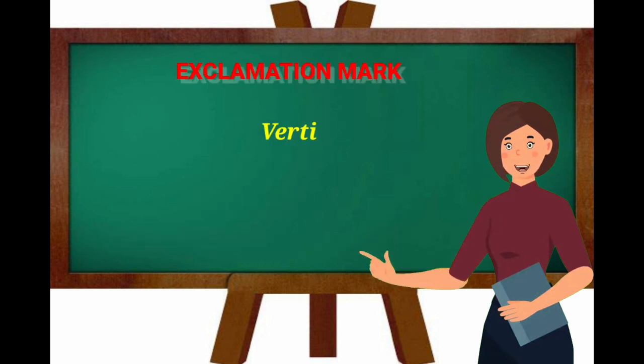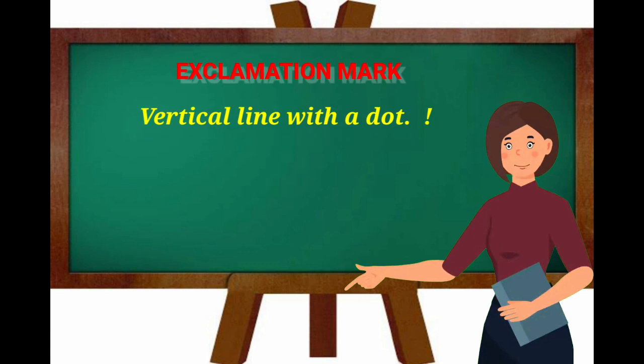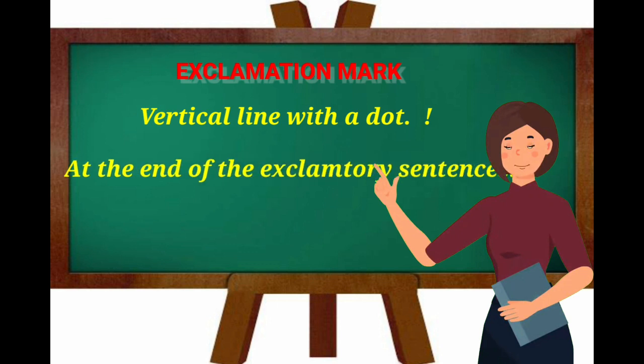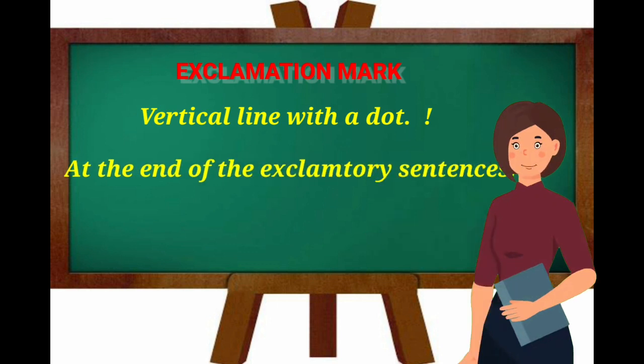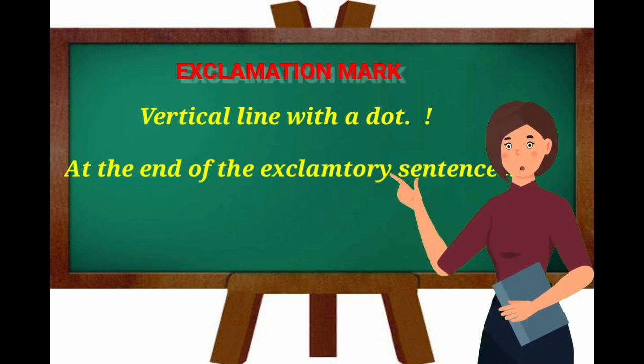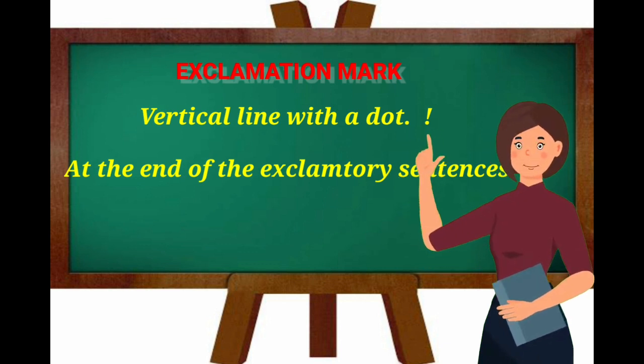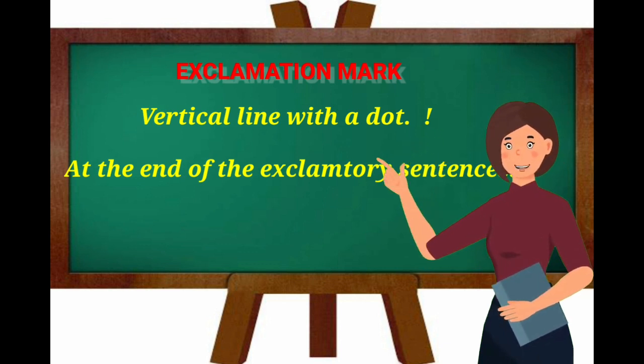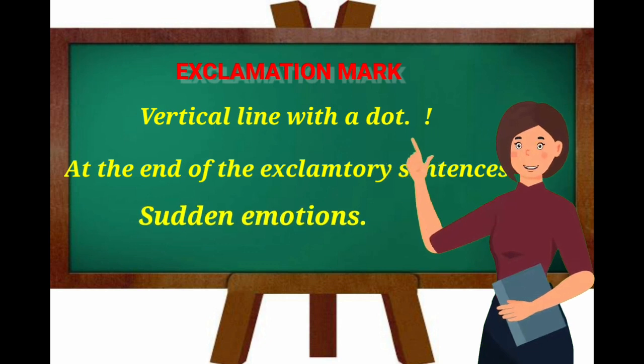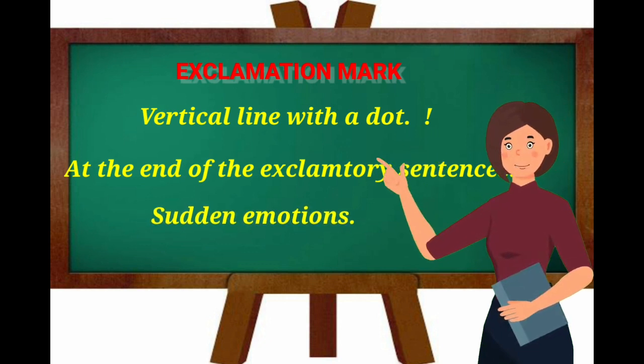A vertical line with a dot is the exclamation mark. It is used at the end of exclamatory sentences. The writer or speaker here is either wondering about something, puzzled, or is in a shock.